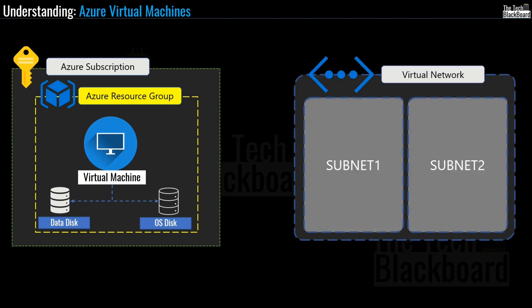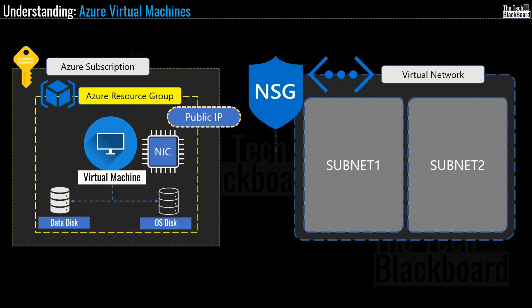Our virtual machine also needs connectivity. For that we have a virtual network divided into subnets. To connect the virtual machine to the network, we need a network interface card — not physical, but a virtual network interface card (NIC). This virtual NIC is connected to the virtual machine on one end and to a subnet in the virtual network on the other. If the virtual machine is public-facing, you also need a public IP address, which is itself a resource in Microsoft Azure. For security, we need NSGs — network security groups — which can be connected to the NIC or the subnet; the best practice is to connect NSGs at the subnet level.